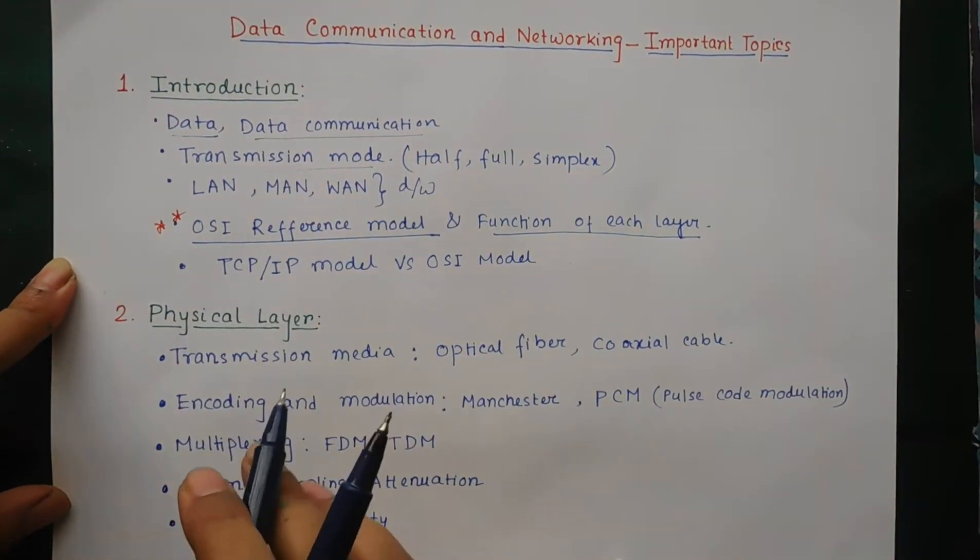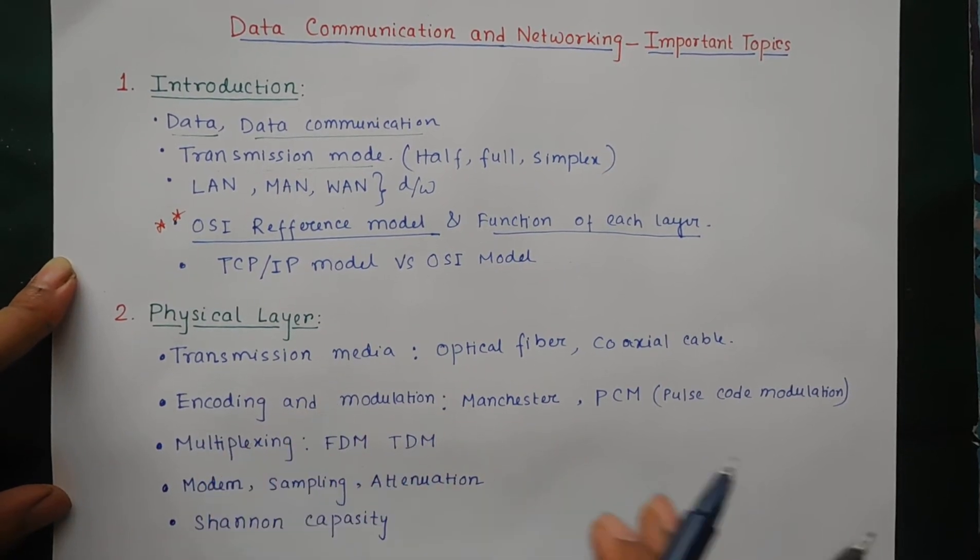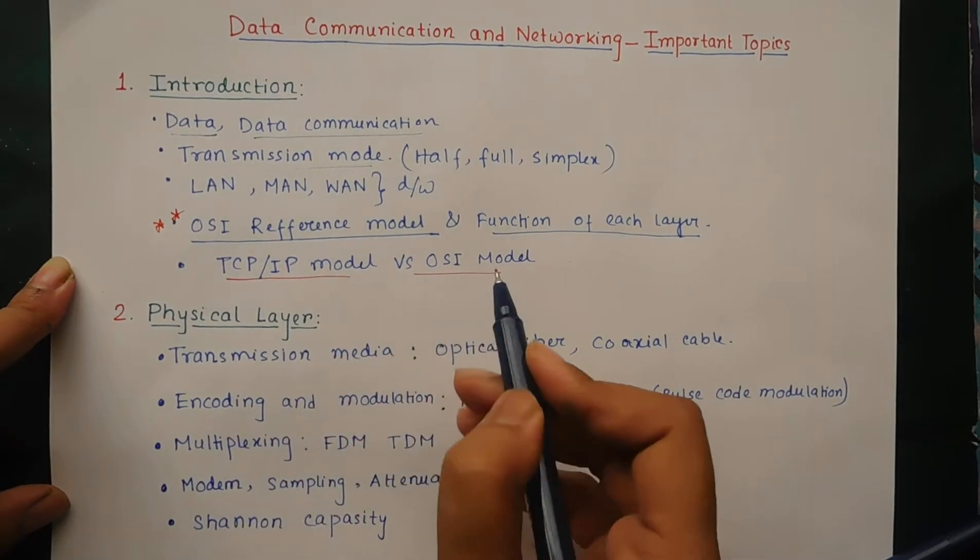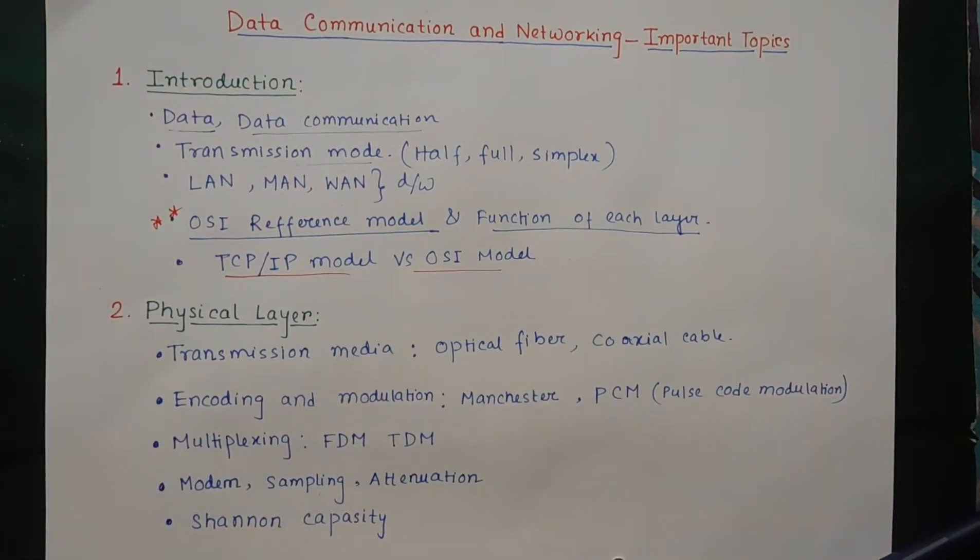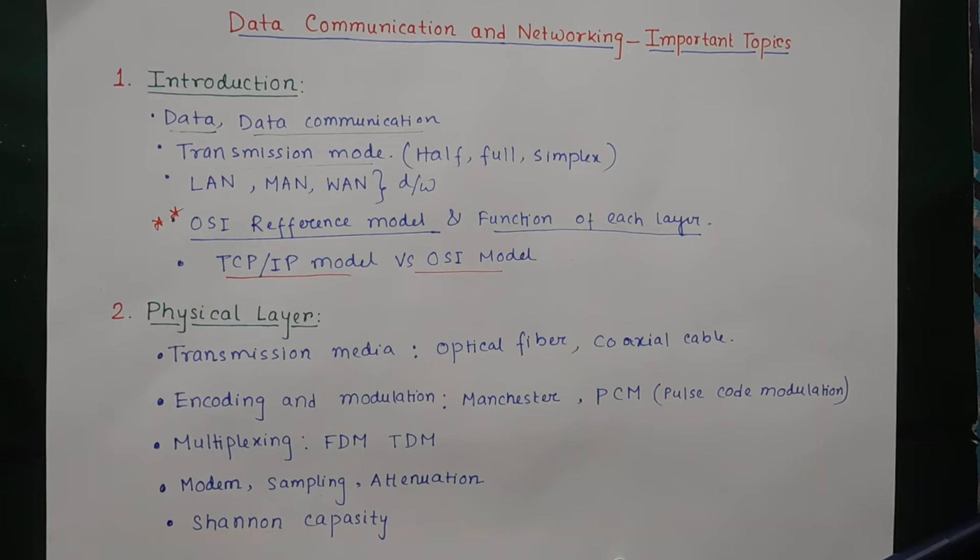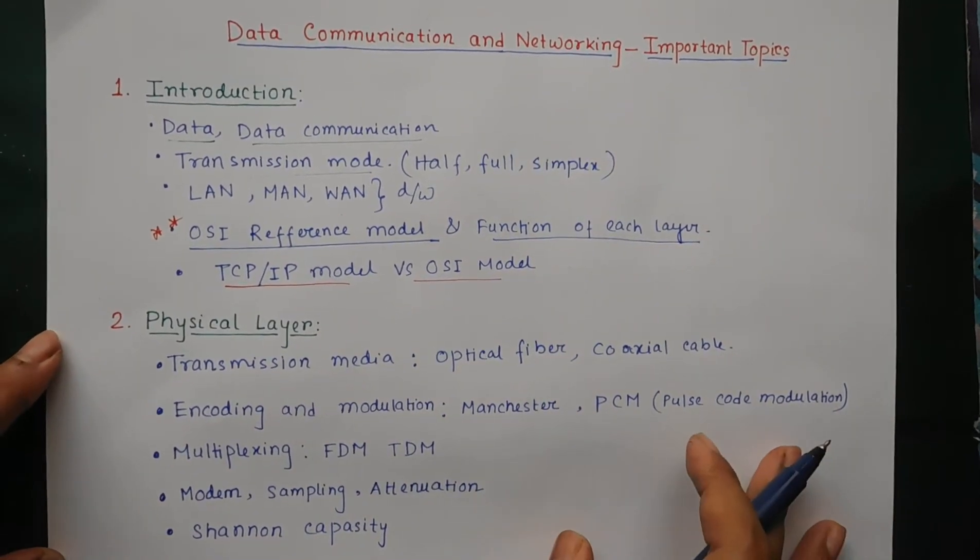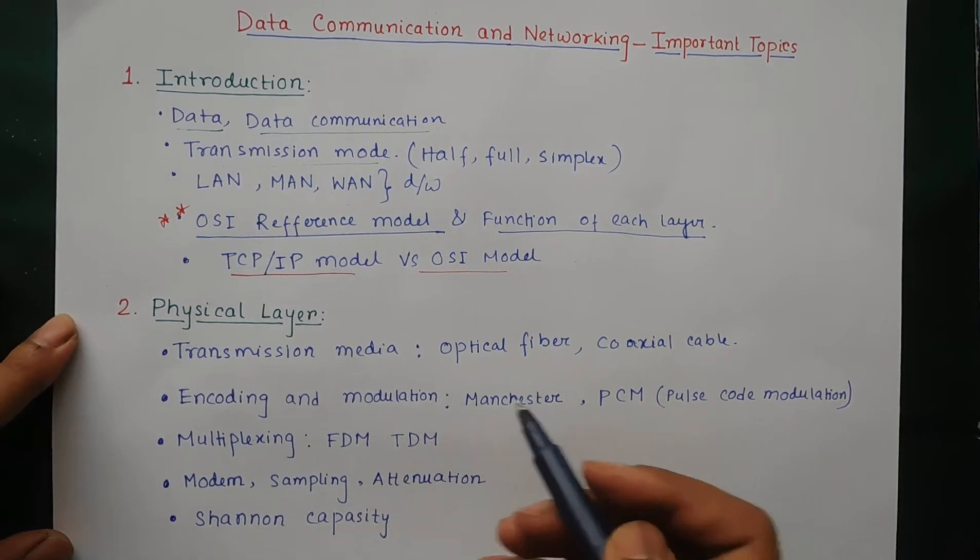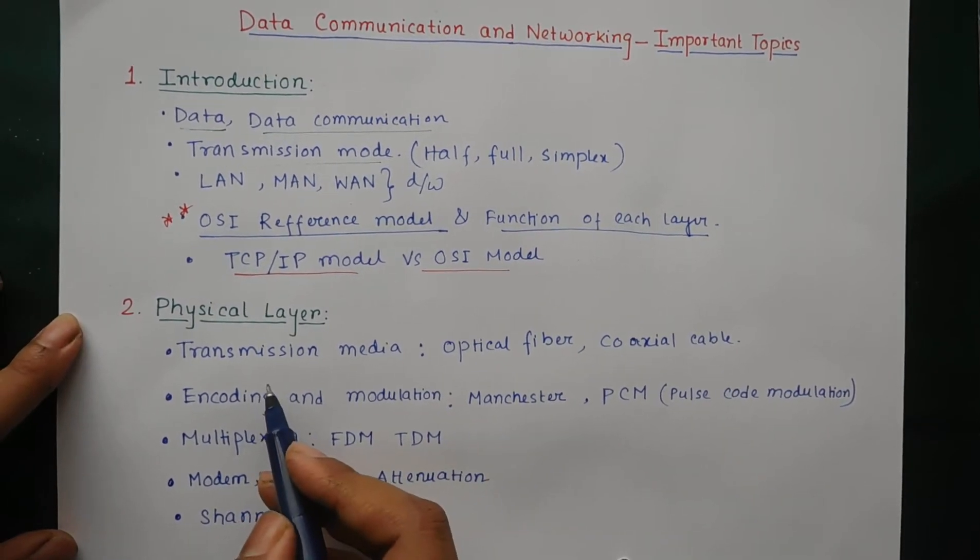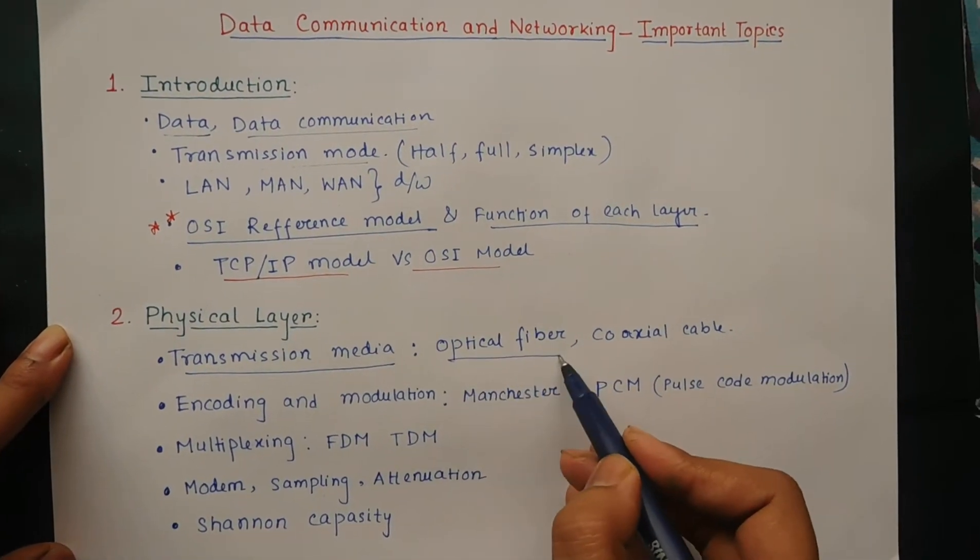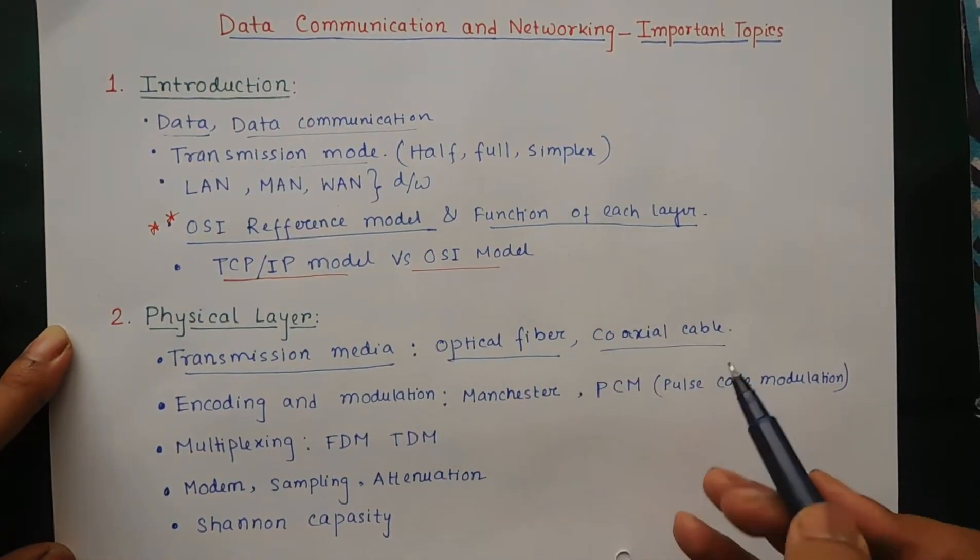Then the TCP/IP model and difference between TCP/IP and OSI model. Then the next part is physical layer: transmission medium, or we can say the types of cables. The examples are optical fiber and coaxial cable.